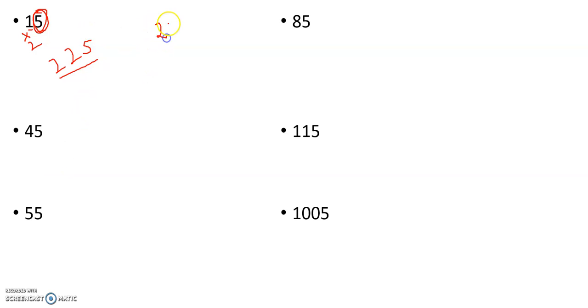I'll just explain it again: write 25 at the end of the number, multiply the first number with its next number. Whatever the number here, you need to multiply it with the next number. So 1 into 2 is 2. I'll explain it in further examples so that you can understand easily.